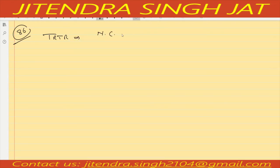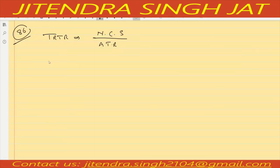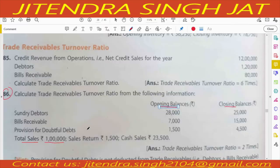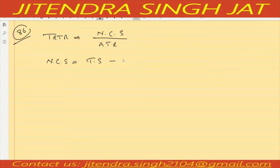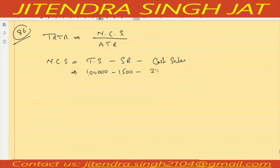To calculate trade receivable turnover ratio, we need net credit sales upon average trade receivable. Net credit sales is required, but total sales is given. So: net credit sales = total sales minus sales return minus cash sales. Total sales is 1 lakh, sales return is 1,500, and cash sales is 23,500. So 1 lakh minus 25,000 equals 75,000 as your net credit sales.